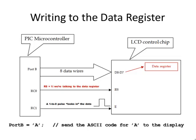The cool thing is you don't have to memorize the ASCII table or look up a lot of codes. If it's a letter, digit, or any other printable character — anything you can type from the keyboard — just put the character in single quotes. So you can say port B is assigned the character 'A', and the compiler will look up the ASCII code for capital A, which happens to be 41 hex. We'll let the compiler look that up to be sure.